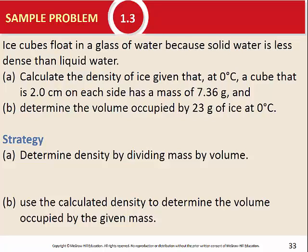Let's do a sample problem. Ice cubes float in water because solid water is less dense than liquid water — which is unique, since most solids are denser than their liquid form. The question asks us to calculate the density of ice given that at zero degrees Celsius, a cube two centimeters on each side has a mass of 7.36 grams. The hardest part of chemistry is not the math — it's reading a word problem, identifying which numbers are relevant, checking units, and knowing which formula to use.